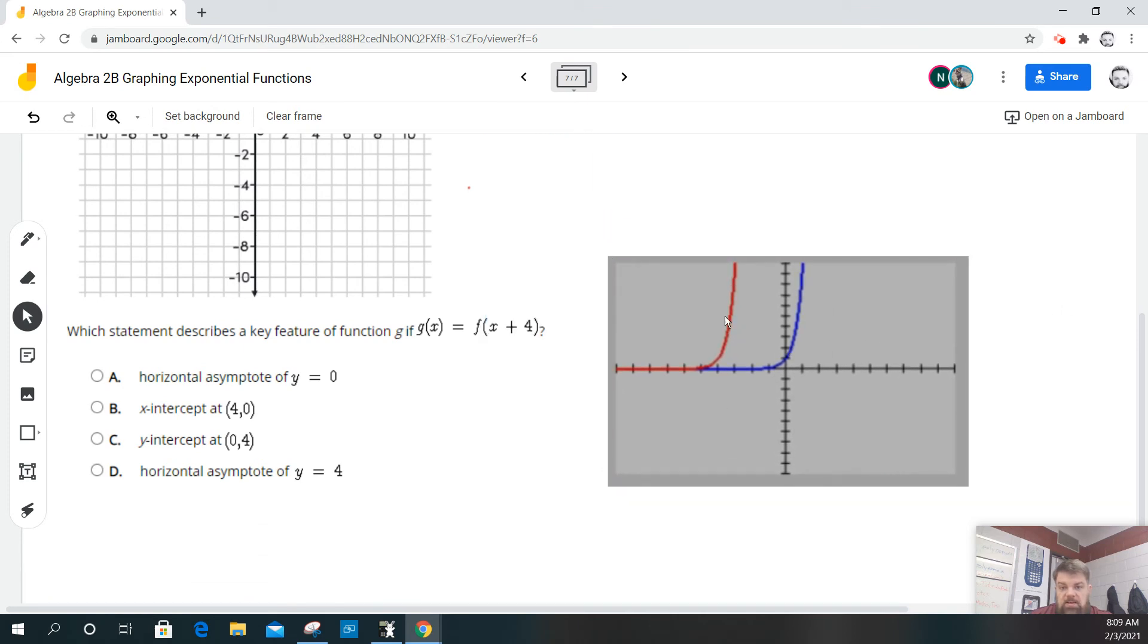So as I look at this, oh, A is the answer because it says it has a horizontal asymptote at y equals 0. That's true. It doesn't change much. It just shifts it to the left. So the original function has a horizontal asymptote at y equals 0. In other words, it never crosses y equals 0. It never crosses the x-axis.